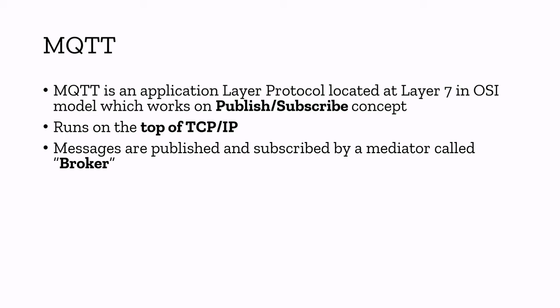In MQTT, there will be a mediator we use to communicate or send data between your sensor and your client device — we call it a broker. We always use a broker in order to send and receive data. The broker can either be local or on the internet. If you want to communicate locally, you can use a local broker. If your device is somewhere and you want to access it from anywhere in the world, you can use a broker available on the internet. There are a lot of public brokers like HiveMQ, and Mosquitto is a local broker — a lot of open source brokers are available.